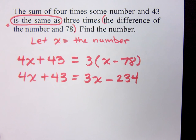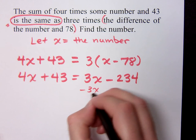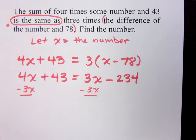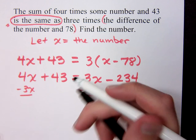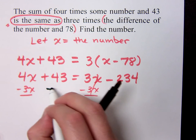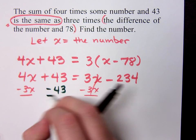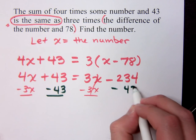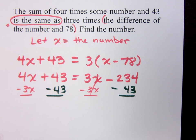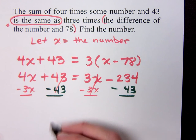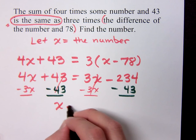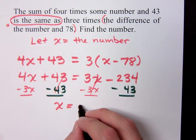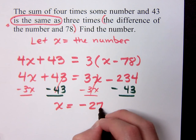Where do you want to move your x's? I want to move my x's to the left, so minus 3x. Which means I need to move my constants to the right, so minus 43. So what does this give me for my equation? x equals negative 277.